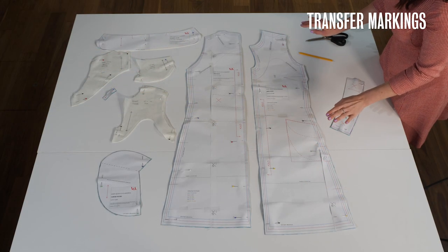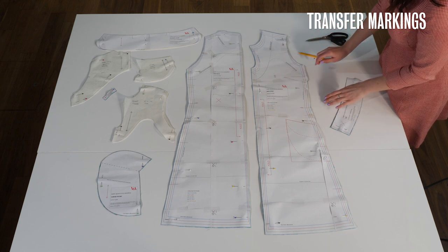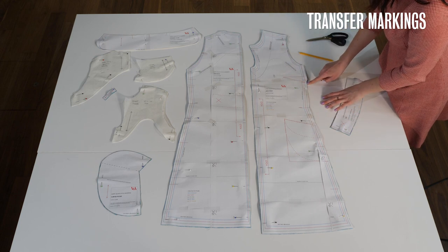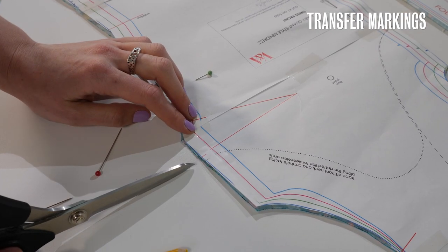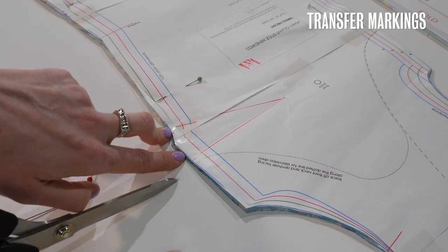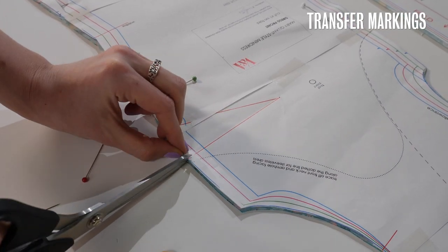So once I've marked out all my notches the other important thing to mark is the bust dart on the front dress piece and this is here it's this red triangle piece.